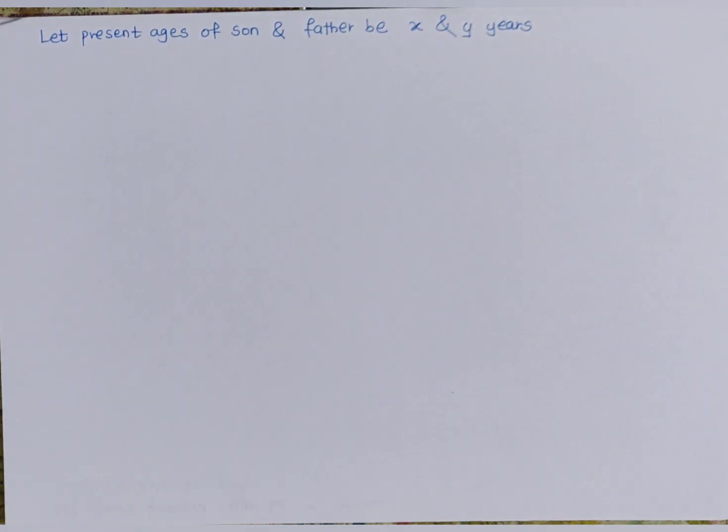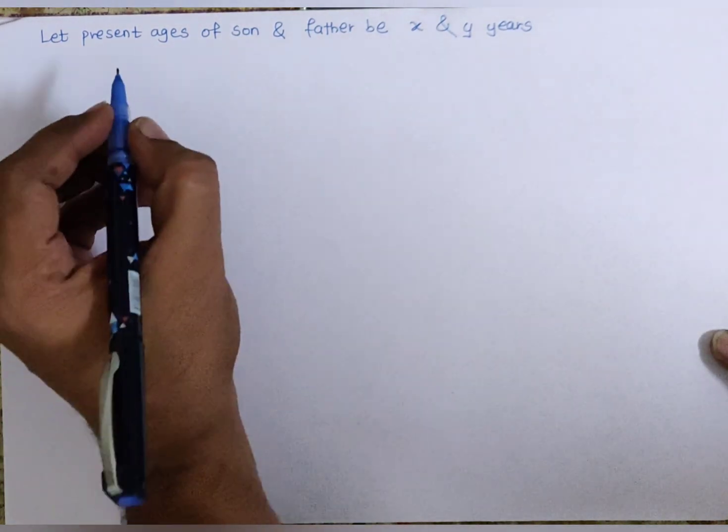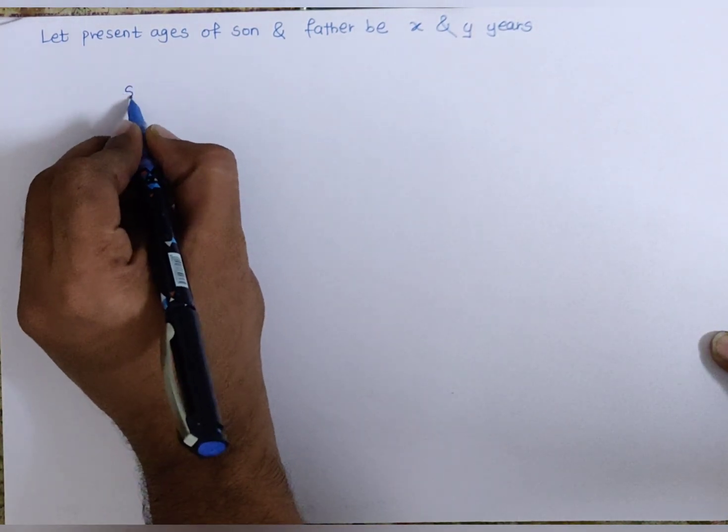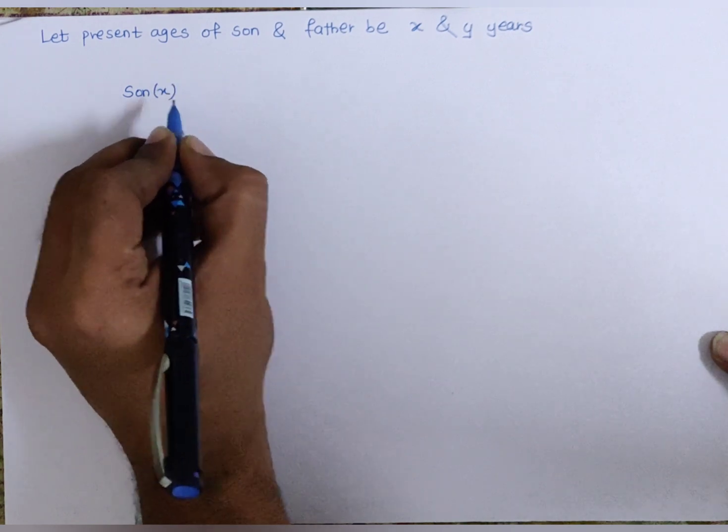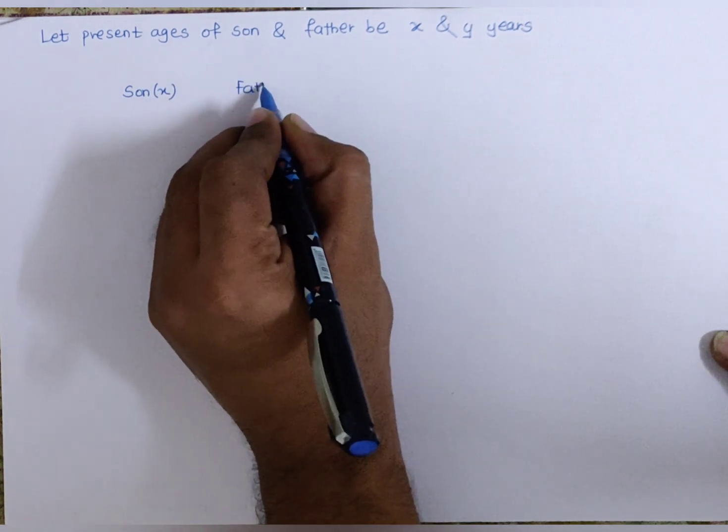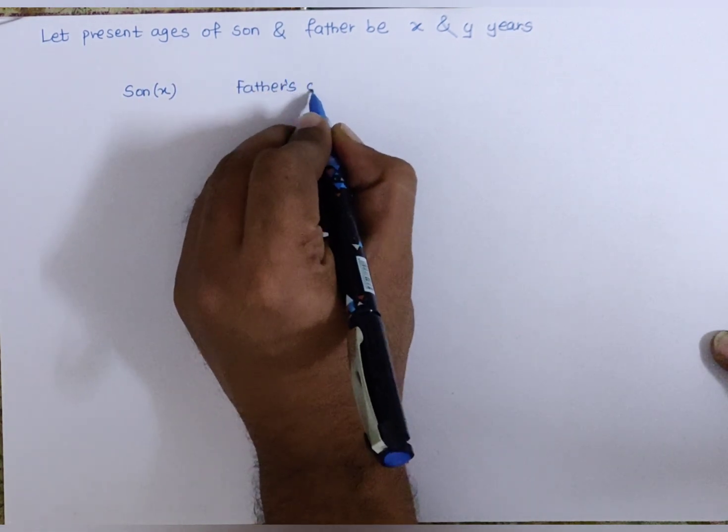Starting with the solution now, let present ages of son and father be x and y years. In the first condition, when the son will be as old as his father, let us solve this with an example. Let's say the son's age is x years and father's age is y years.